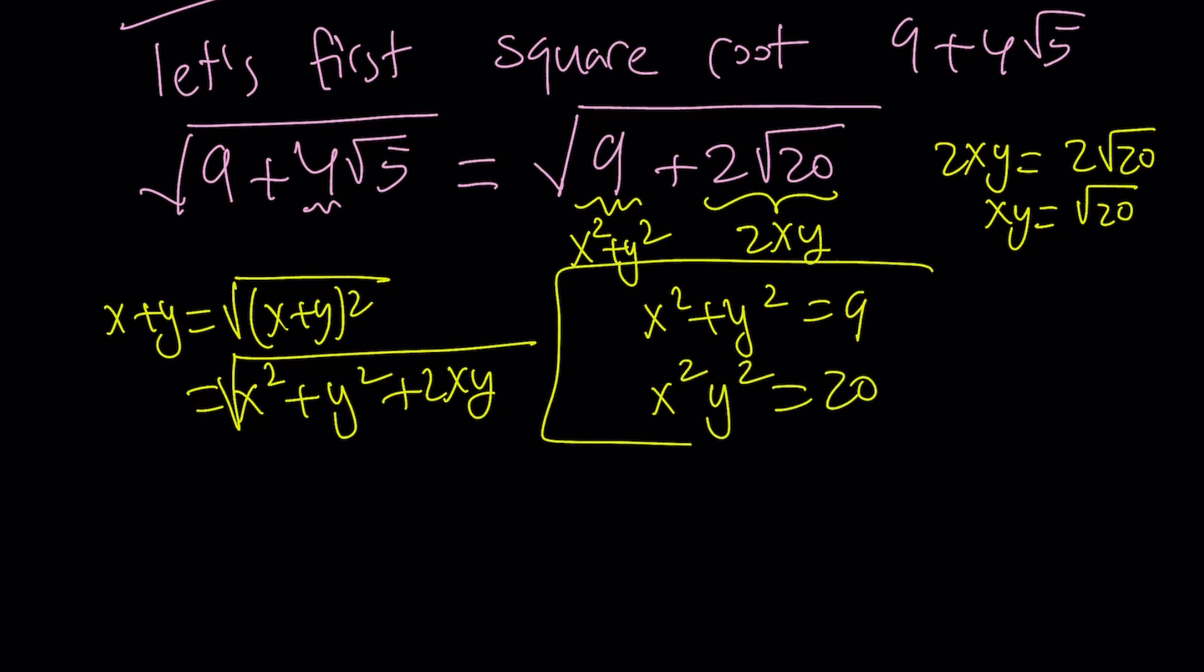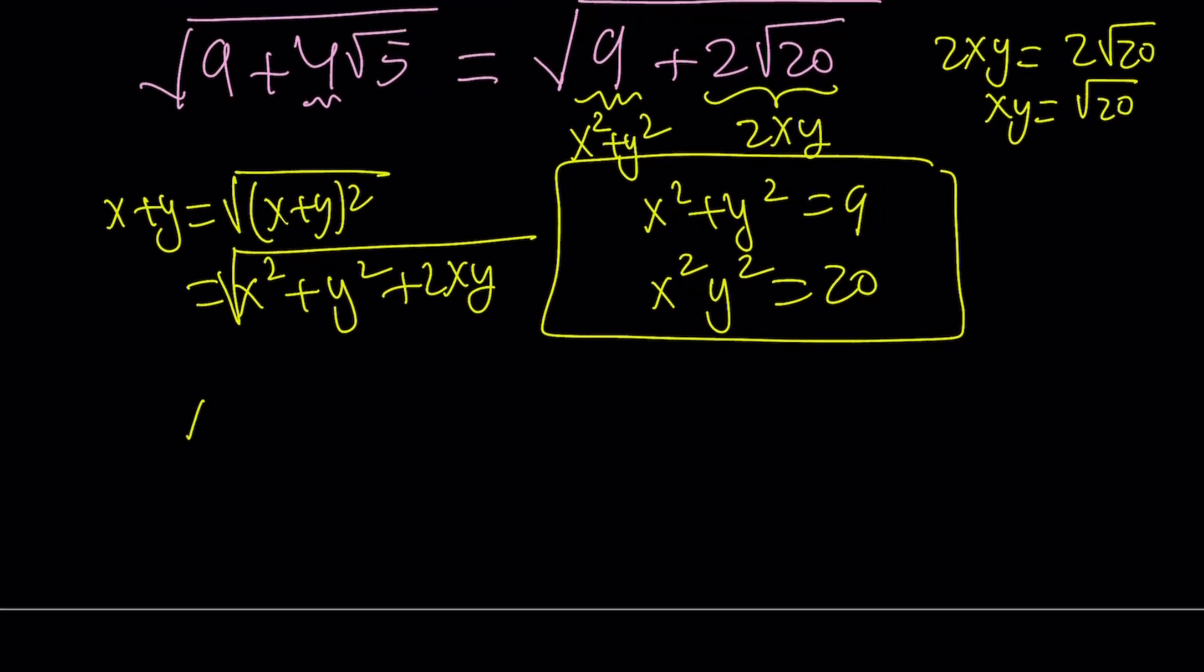In other words, you are looking for two numbers whose sum is 9 and whose product is 20. And those numbers are easy to find. For example, 4 and 5, right? Of course, they can switch around too, but that doesn't matter. I also want an additional requirement: x and y are positive, because I'm dealing with positive terms here.